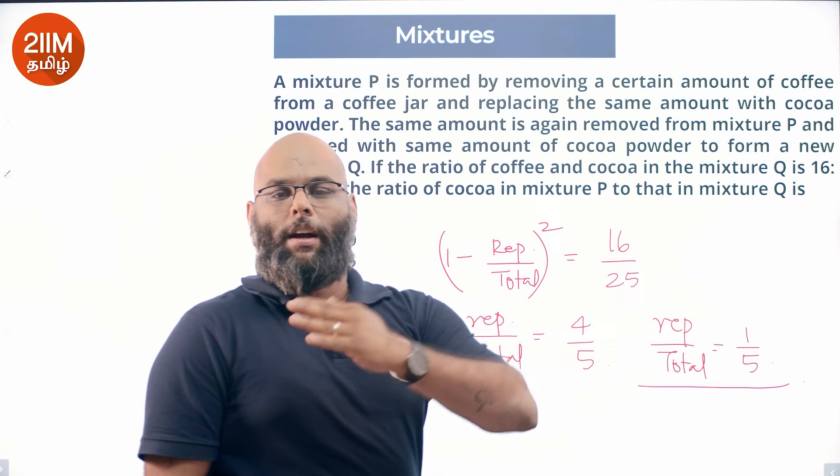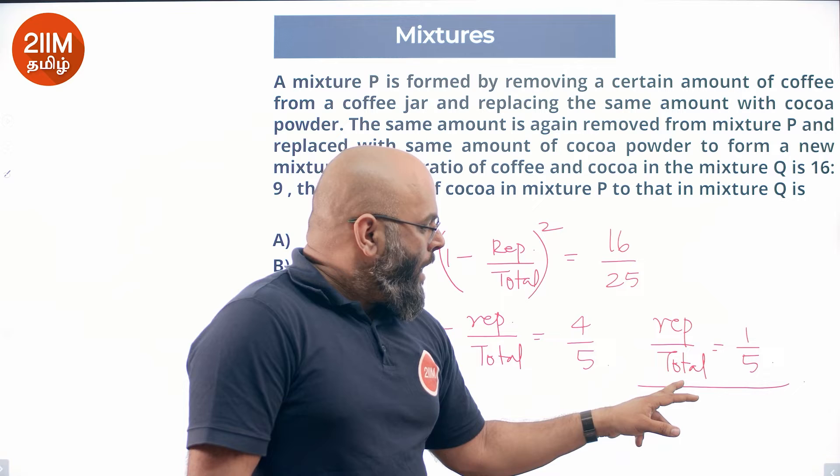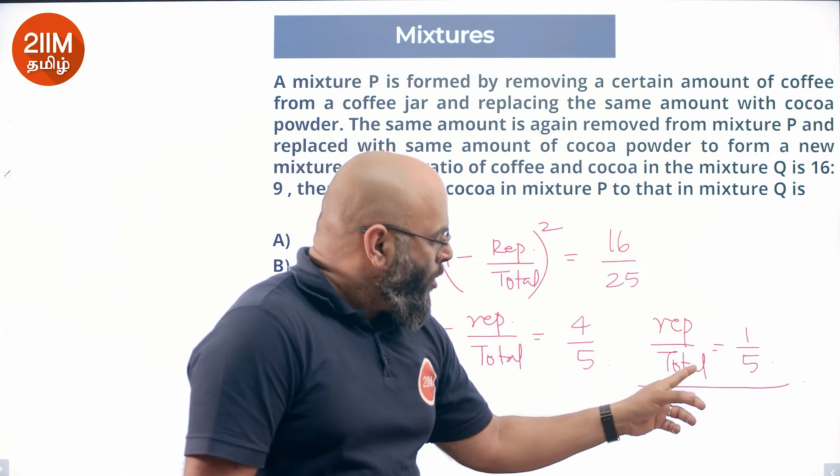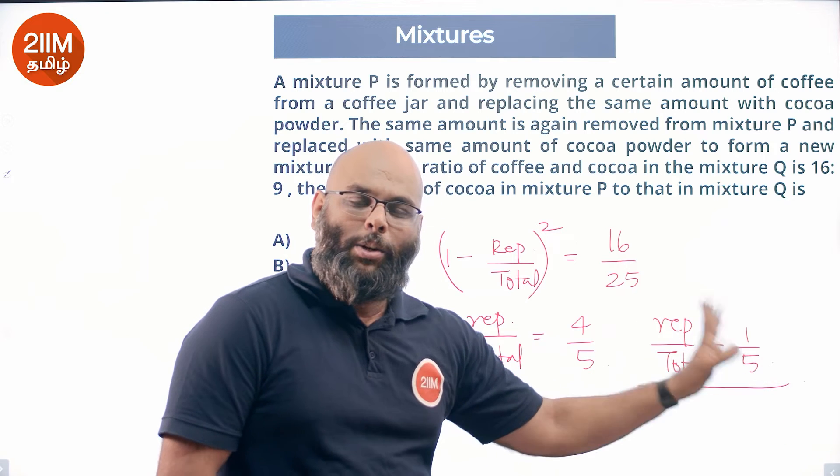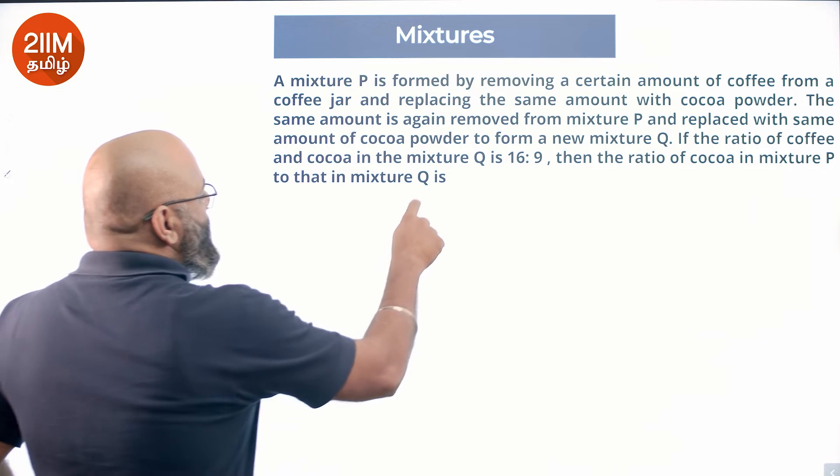One-fifth of the jar is replaced every time. Twenty percent of the jar. Balance is 80 percentage. Every time the jar is replaced. So every replacement is twenty percent. A mixture P, first time replace.